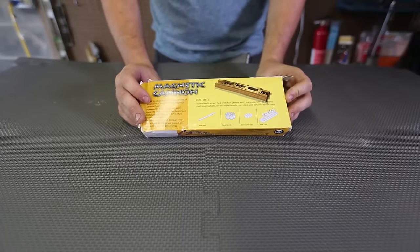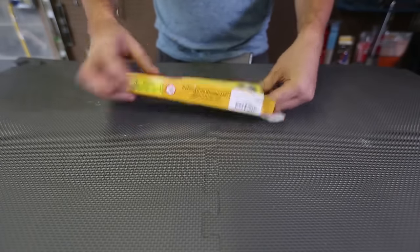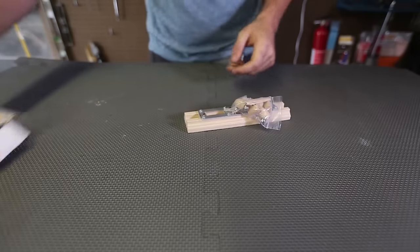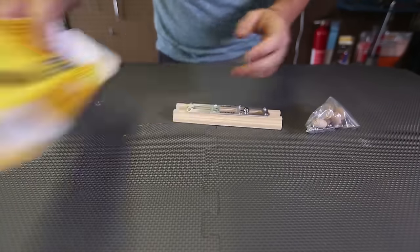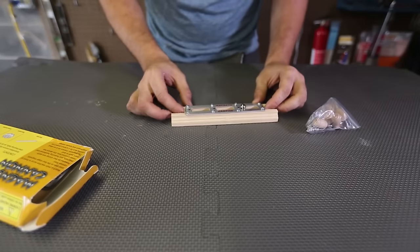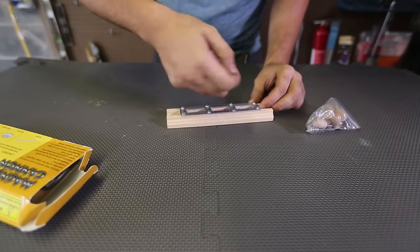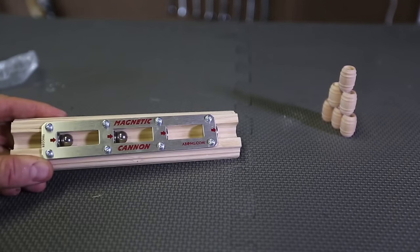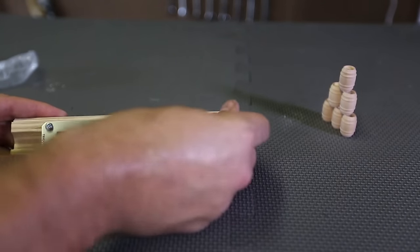For this experiment we got here magnetic cannon. Let's see what it's all about. The box got a little bit messed up, but it's all good. Looks like all the instructions is in the back right here. And they pretty much did everything for me. So what we're going to do is grab these balls and load up into each one of them.